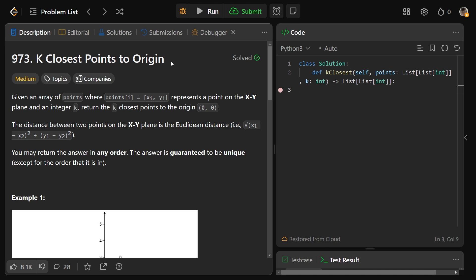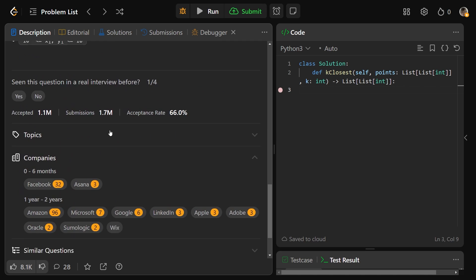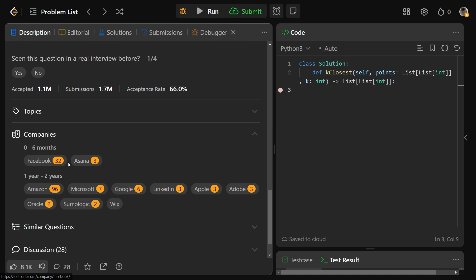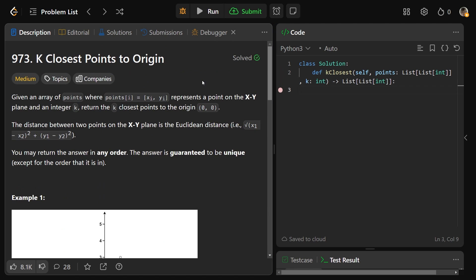Hey guys, how's it going? Greg here, and let's solve K Closest Points to the Origin. It's a really important problem because, as we see in companies, Facebook has asked it 32 times, Amazon's asked it 96 times, as well as the other FANG companies. So let's make sure we get this question right.